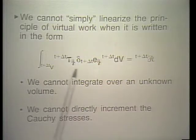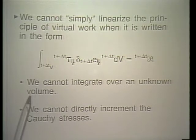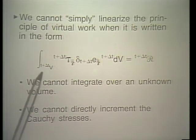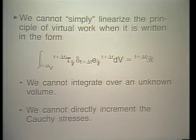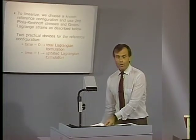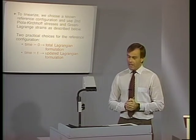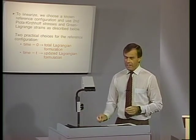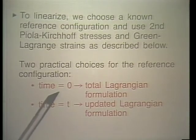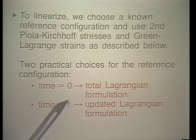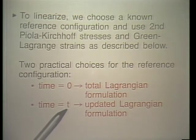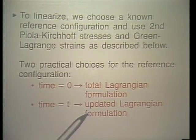An important point is that we cannot simply linearize the principle of virtual work in the form involving Cauchy stresses, because we cannot integrate over an unknown volume — the volume at time t plus delta t is unknown — and we cannot directly increment the Cauchy stresses. To linearize, we need to choose a known reference configuration. One natural choice is the configuration at time 0, which gives us the total Lagrangian formulation. If we use the configuration at time t as the reference, we get the updated Lagrangian formulation.